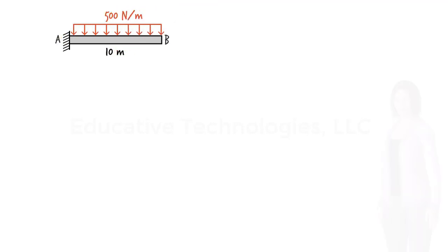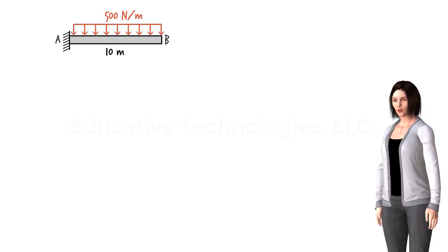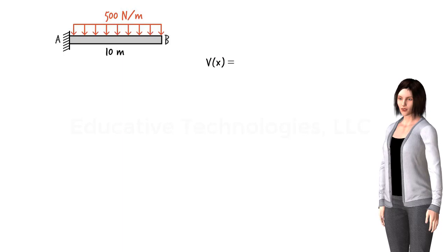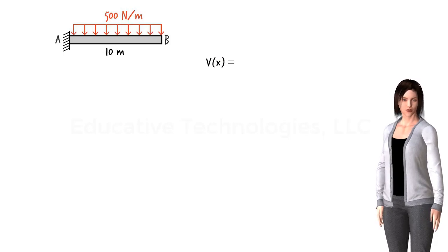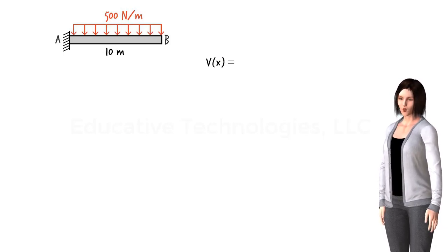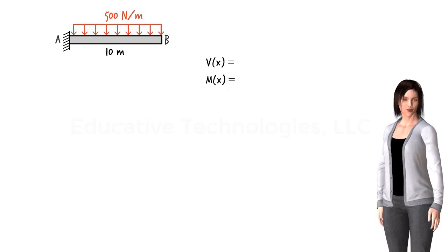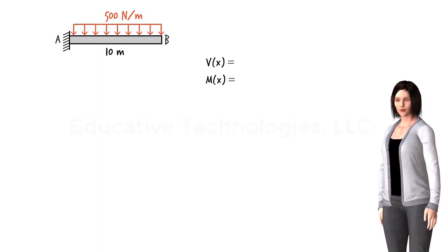Let's consider a more interesting problem. Suppose we have a cantilever beam subjected to a uniformly distributed load. Here we wish to come up with algebraic equations for calculating shear and moment at any point in the beam — that is, equations in the form V(x) and M(x), where x is the position of an arbitrary point. Substituting a value for x gives the shear or bending moment at that location. In other words, we want to represent shear and moment algebraically.